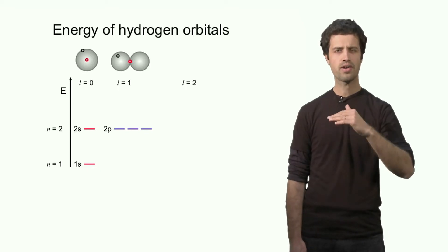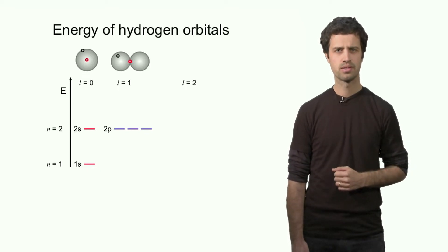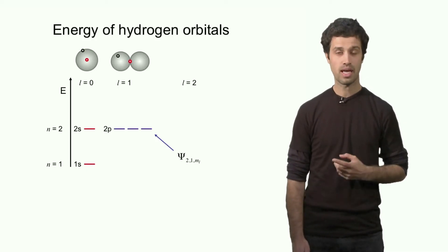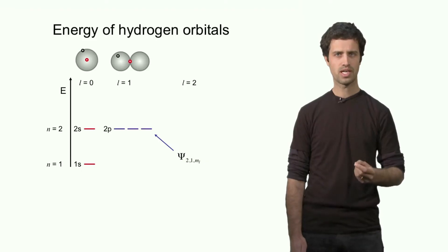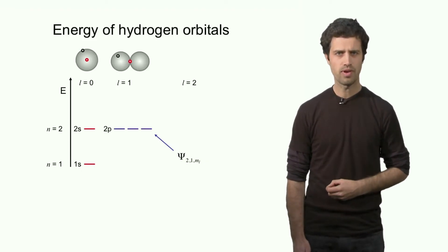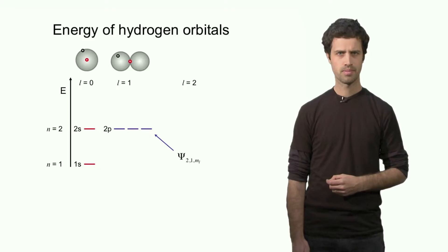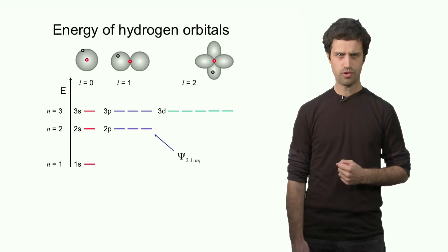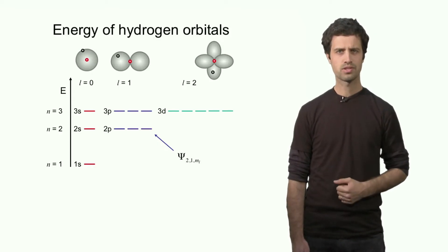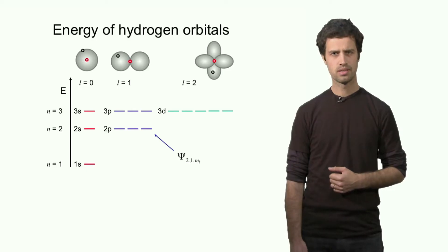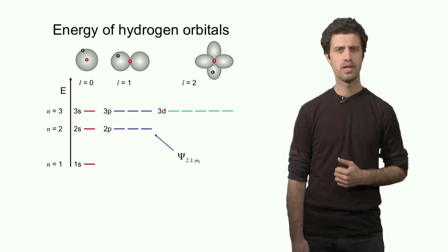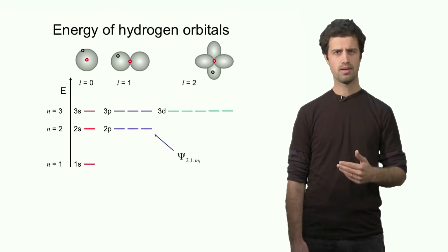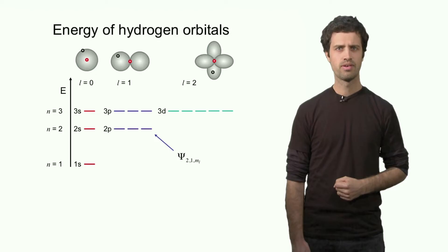The 2s and the 2p are higher energy than the 1s. Remember that these orbitals are actually wave functions. For instance, the 2p orbitals can be described by a wave function with n equals 2, l equals 1, and 3 values of ml. The orbitals with the next lowest energies are the ones in level n equals 3: the 3s, the 3p, and the 3d. We see that the energy of the orbitals scales with n — the lower n, the lower the energy; higher n's have higher energy.